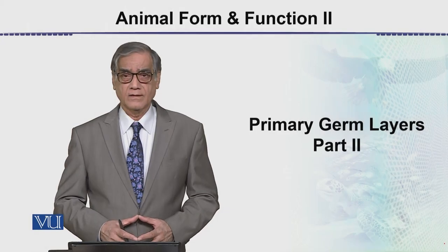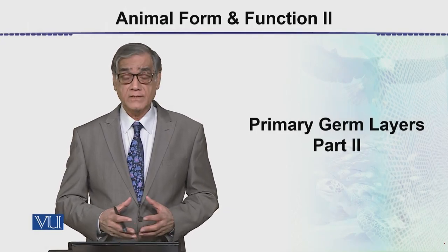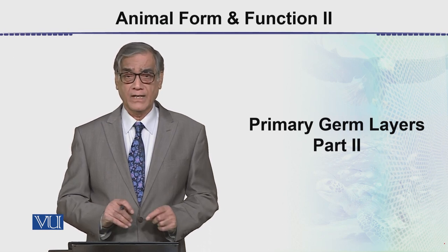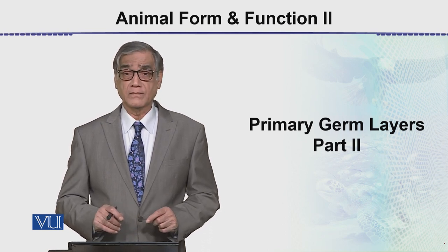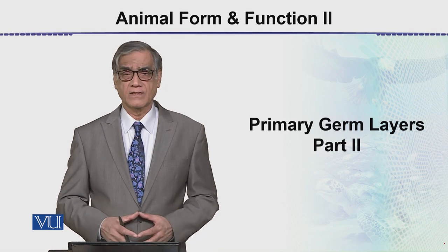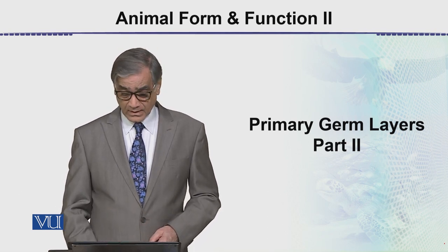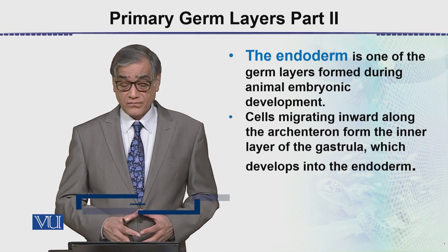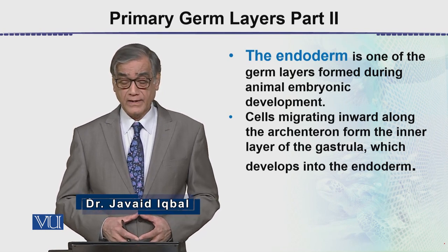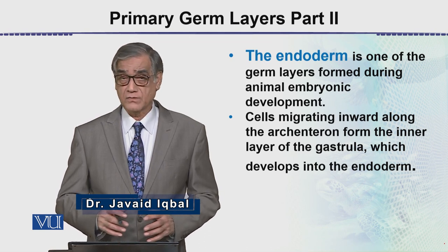In this module, we will be discussing the primary germ layers. In part 2, we will discuss the endoderm and mesoderm, because before we have discussed the ectoderm. Endoderm is one of the germ layers that is formed during animal embryonic development. We have seen it in the gastrulation.